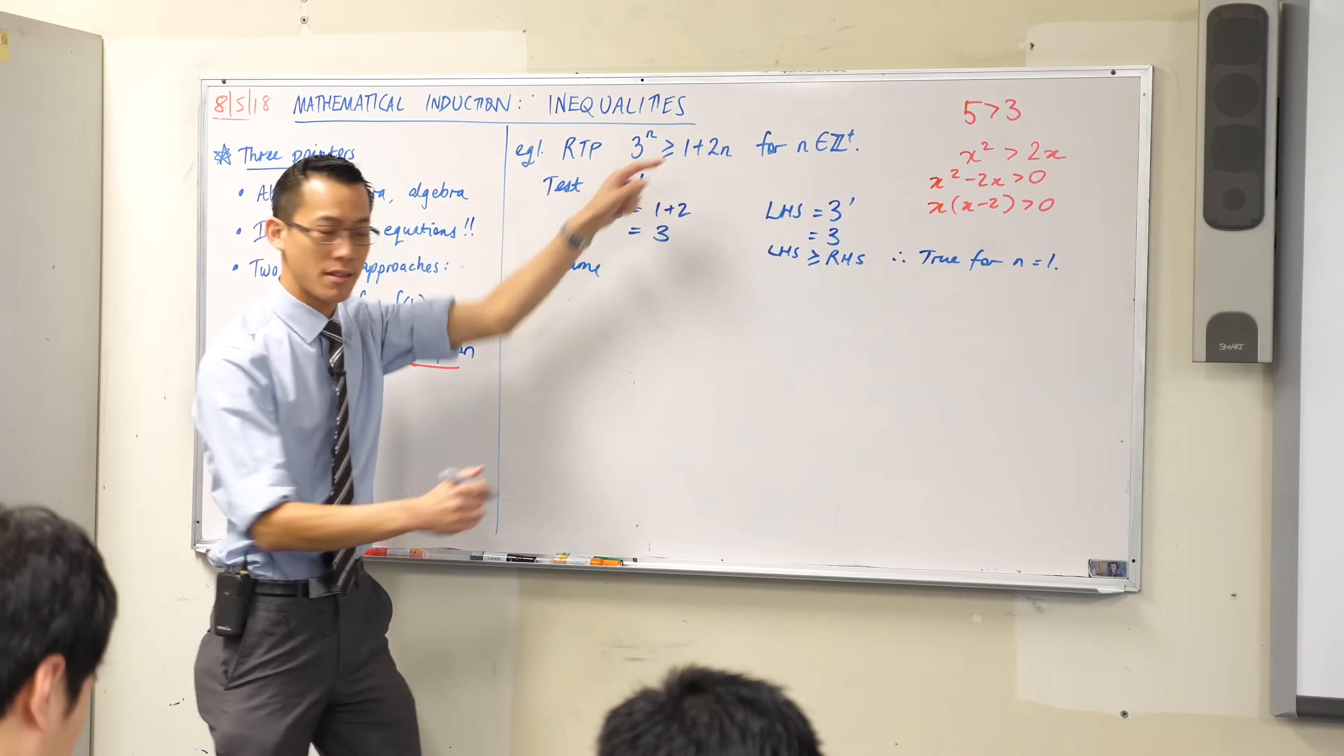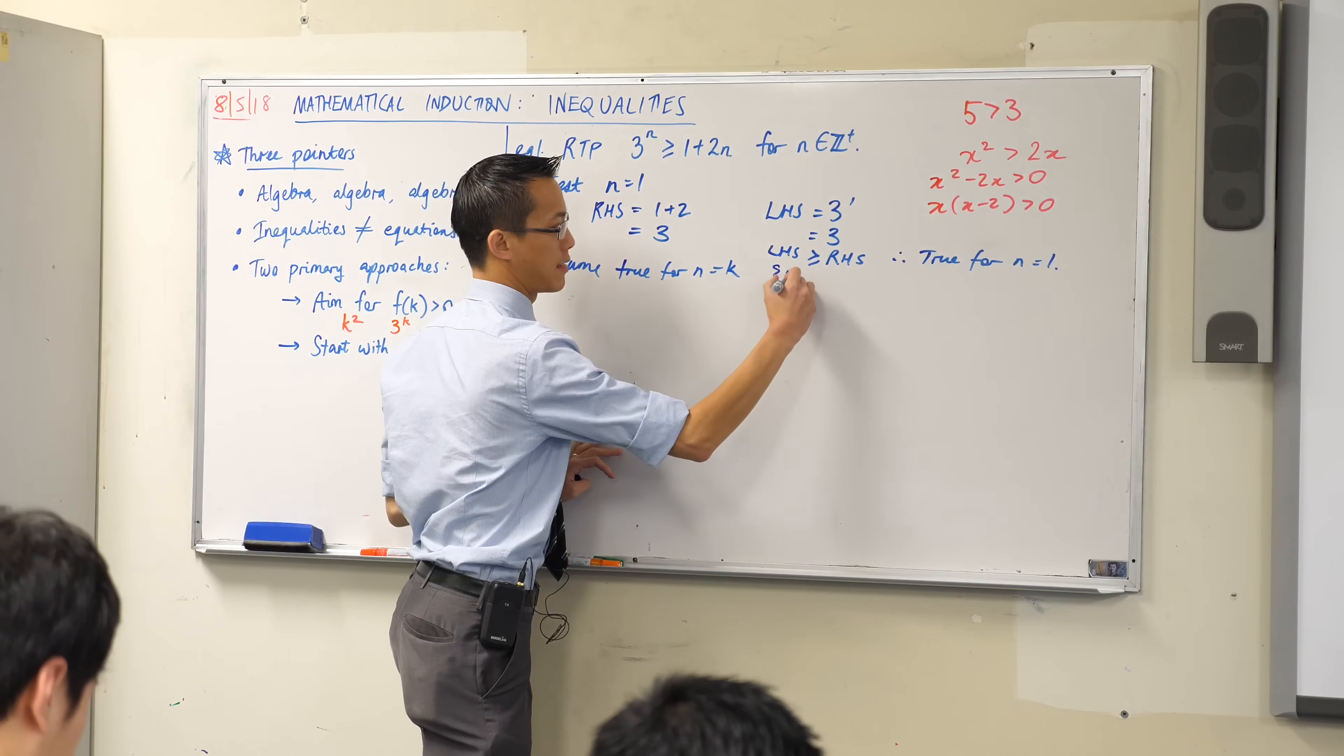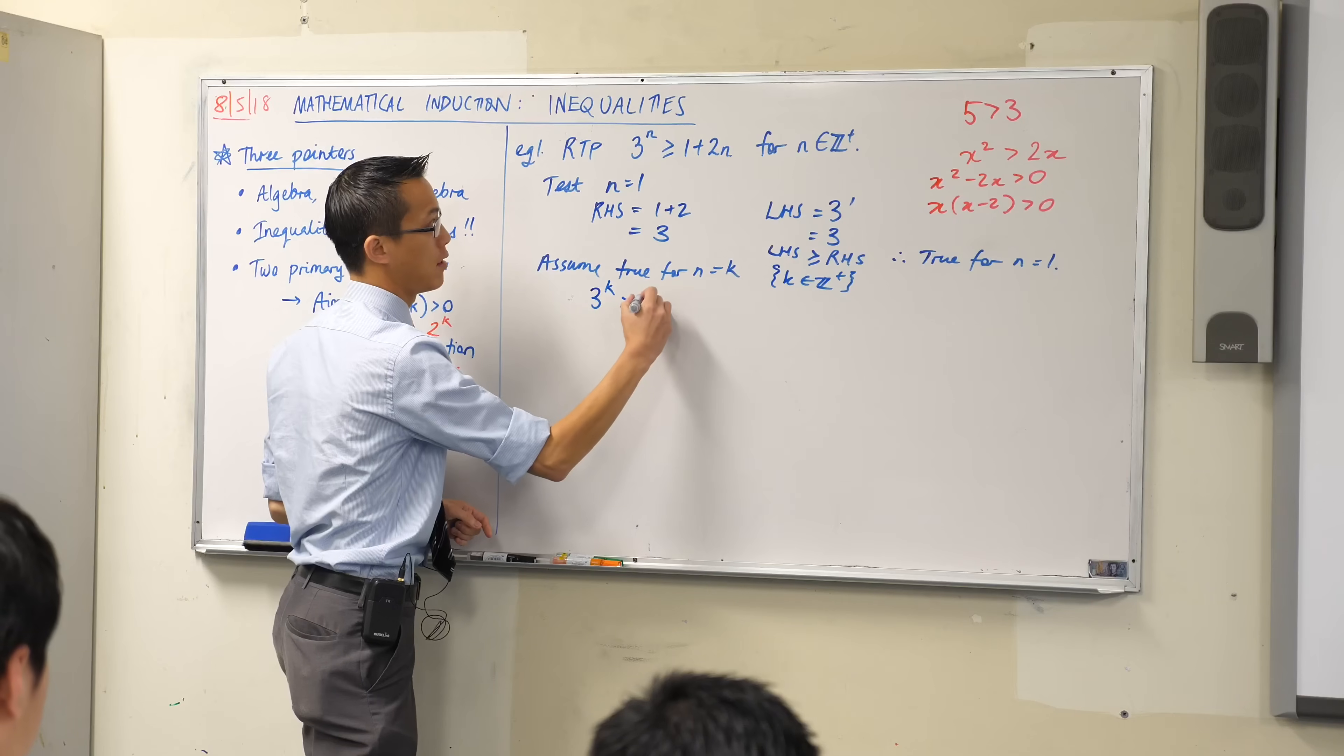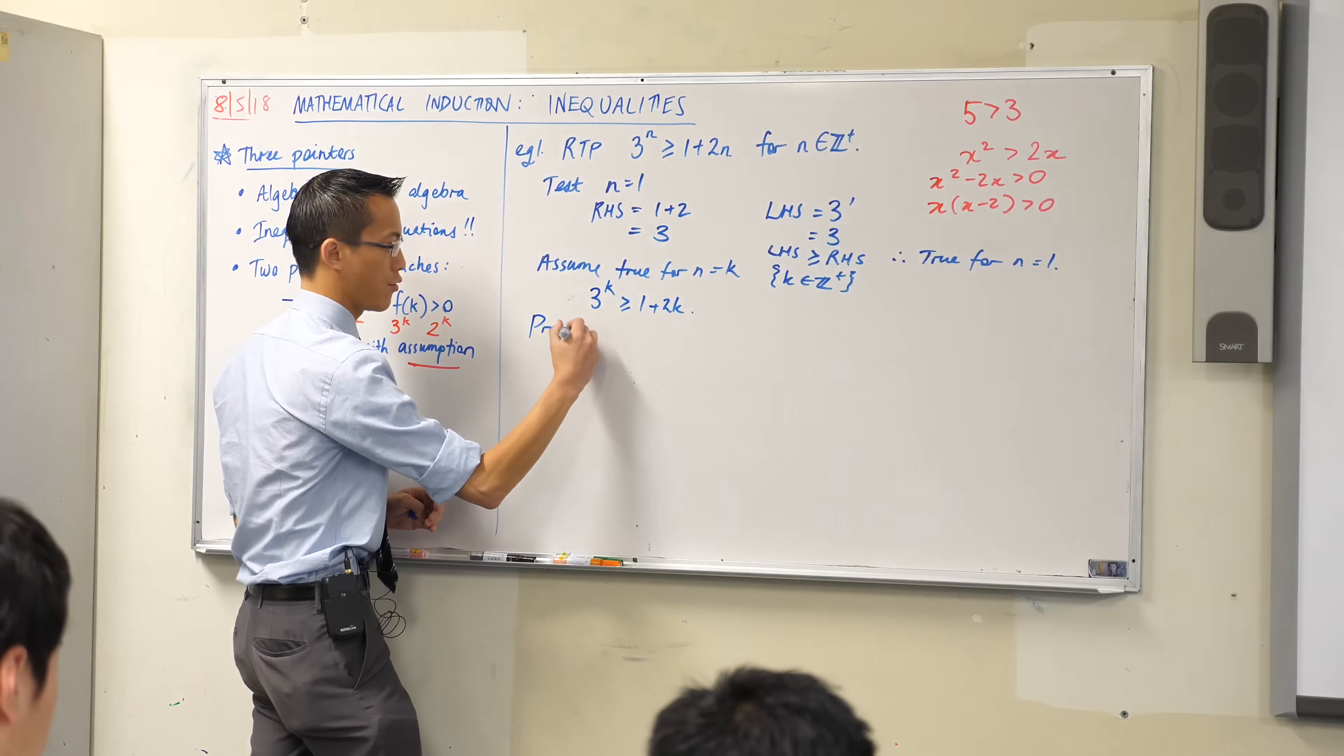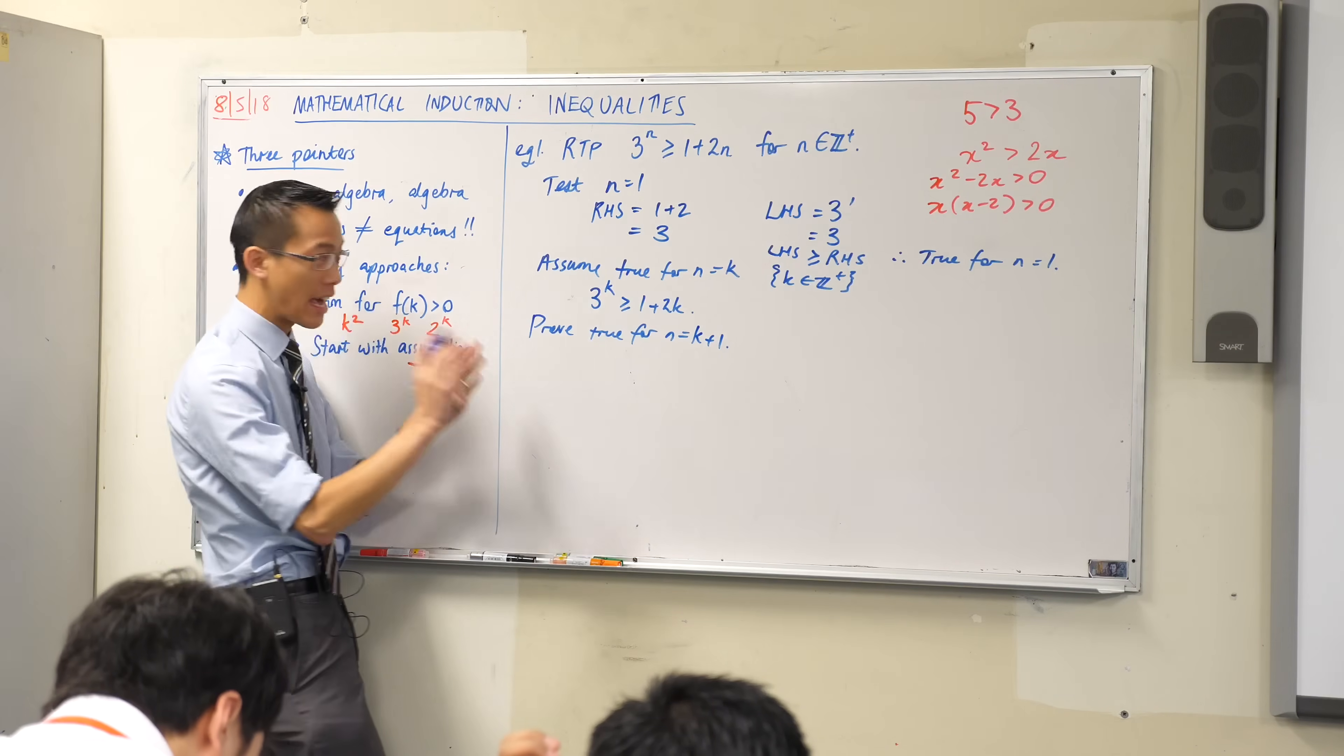Very good. So I'm going to assume that this statement is true for my particular value k, and k is going to follow all the same rules as n. So I'm going to write that down, that k is a positive integer, just like n is. So we can just go ahead and write down the assumption. There it is. And now we get to the meat of our proof. We are going to prove true for, say it all with me, n equals k plus 1.